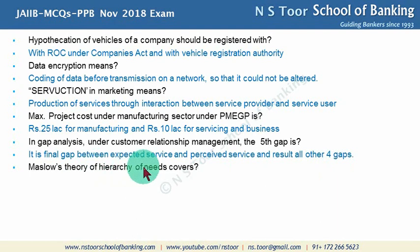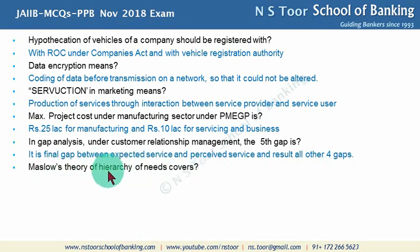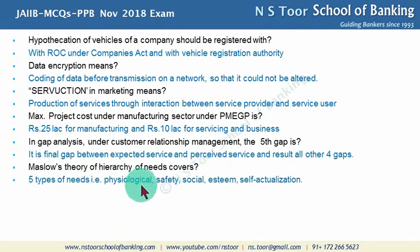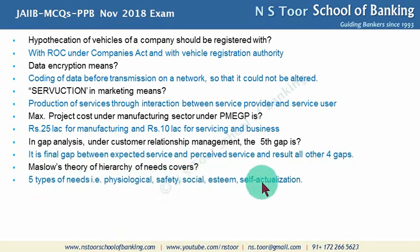Maslow's theory of hierarchy of needs covers five types of needs: physiological needs, safety needs, social needs, esteem needs, and self-actualization needs.